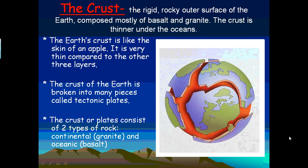The crust of the Earth is also broken into pieces we call tectonic plates, and that's what the picture is representing on this page. The crust, or plates, consists of two types of rock.